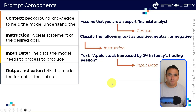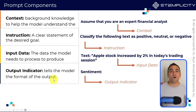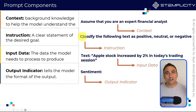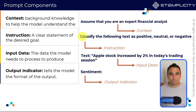Finally, the fourth component of a prompt is what we call an output indicator. This simply tells the model what the format of the output should look like. These are the four key components to structure any powerful prompt. With that, let's go back to ChatGPT and test out this prompt together.